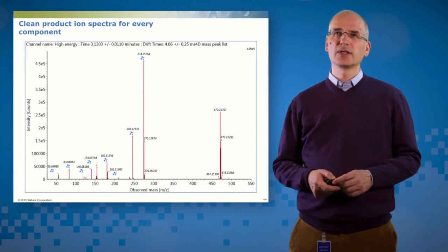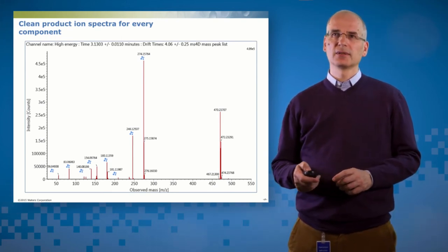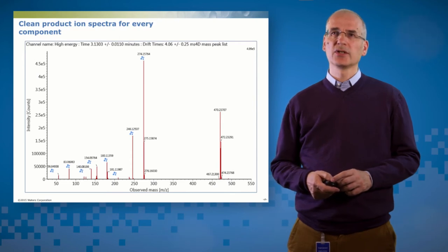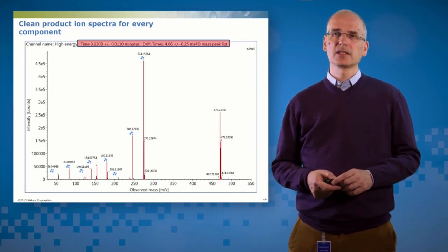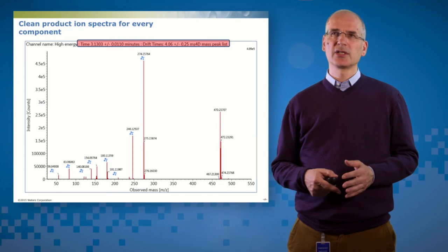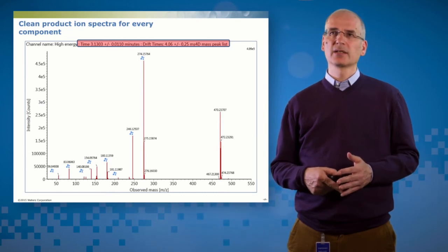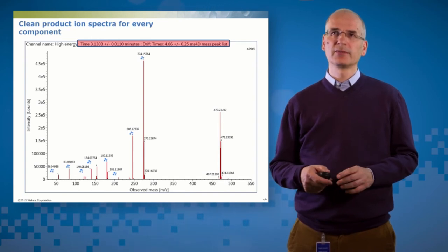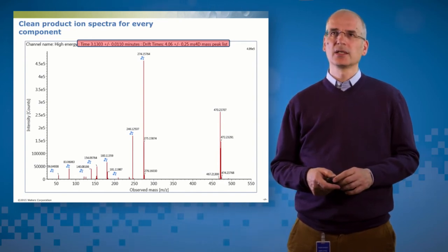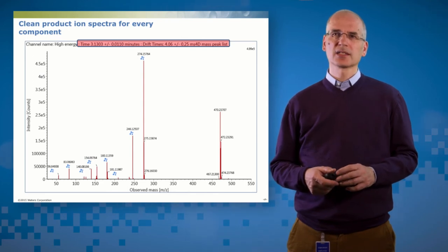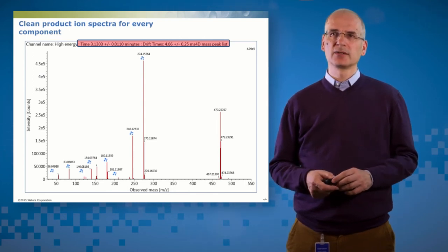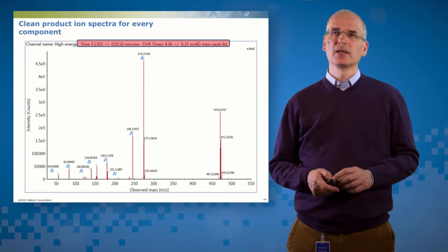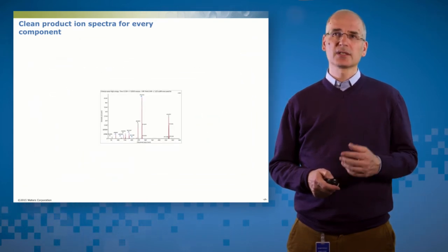I talked about the value of HDMSE for generating clean product ion spectra. So here's nefazodone itself with the product ion spectrum of nefazodone. You can see at top, this is a four-dimensional componentization. So I've taken the peak at 470, the mass at 470, at the retention time of 3.13 minutes with a drift time of four milliseconds plus or minus a small tolerance. And that's cleaned up the spectrum of nefazodone into what you see there.